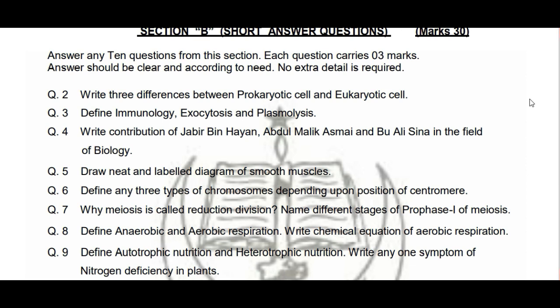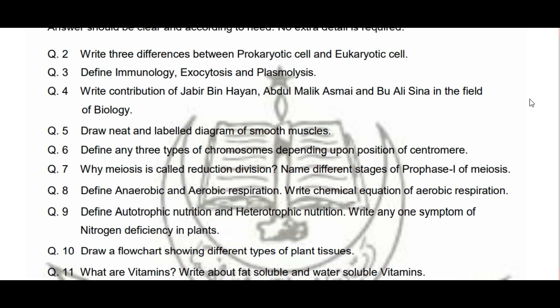Prokaryotic aur eukaryotic cells ke koi teen differences batane hain. Yaad rakhe ke jo bhi difference likh rahe hain wo heading banakar likhein — zyada behtar hai. Second question hai: 'Define immunology, exocytosis and plasmolysis.' Teen definitions likhni hain, ek definition ka ek mark hoga. Next question hai: 'Write contribution of Jabir bin Hayyan, Abdul Malik Asmai and Bhu Ali Sina in the field of biology.' Sirf contribution pooch gaya hai, toh ek bhi contribution kafi hai, lekin koshish karein ke do ya teen contributions yaad hon.